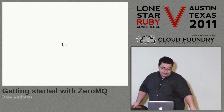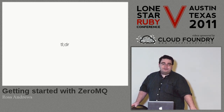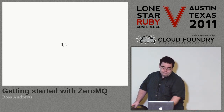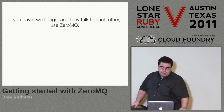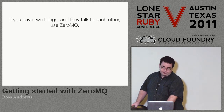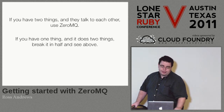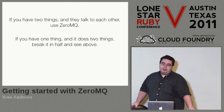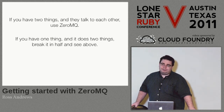The TL;DR version of this talk: if you have two things and they talk to each other, use ZeroMQ to have them talk to each other. If you have one thing and it does two things, break it in half and see the above.